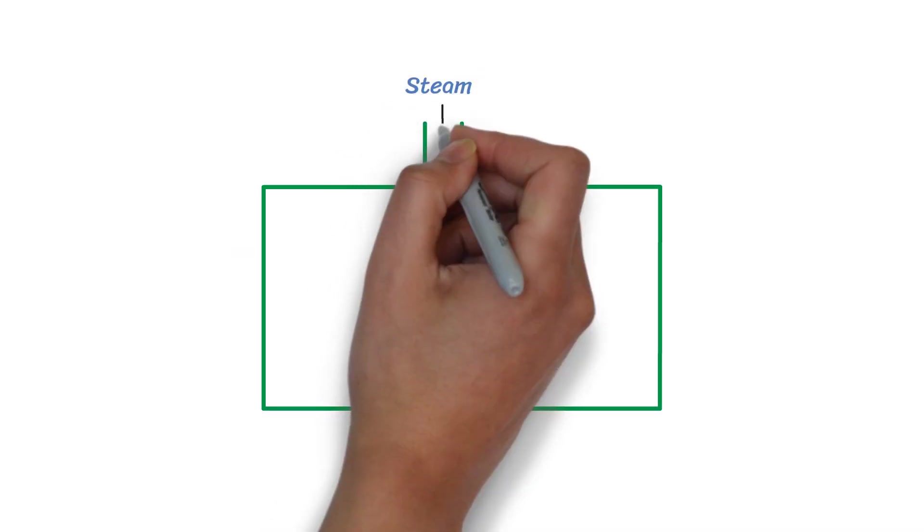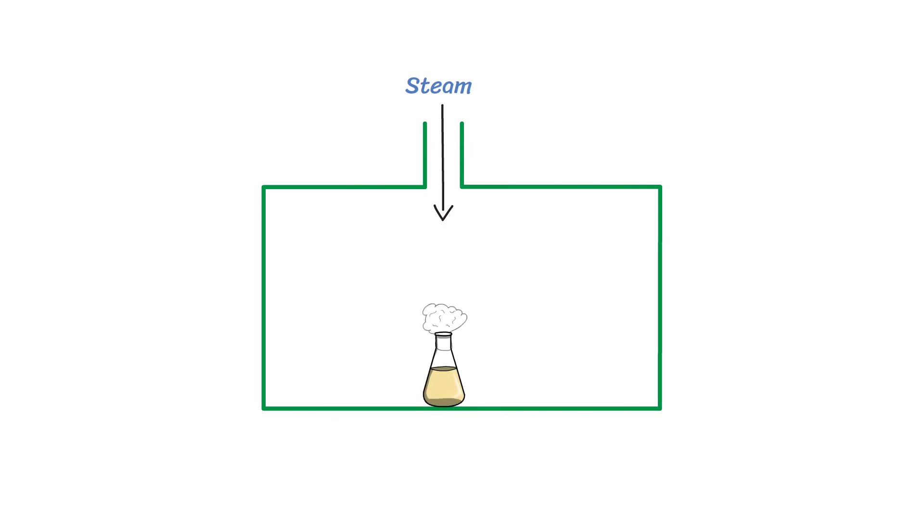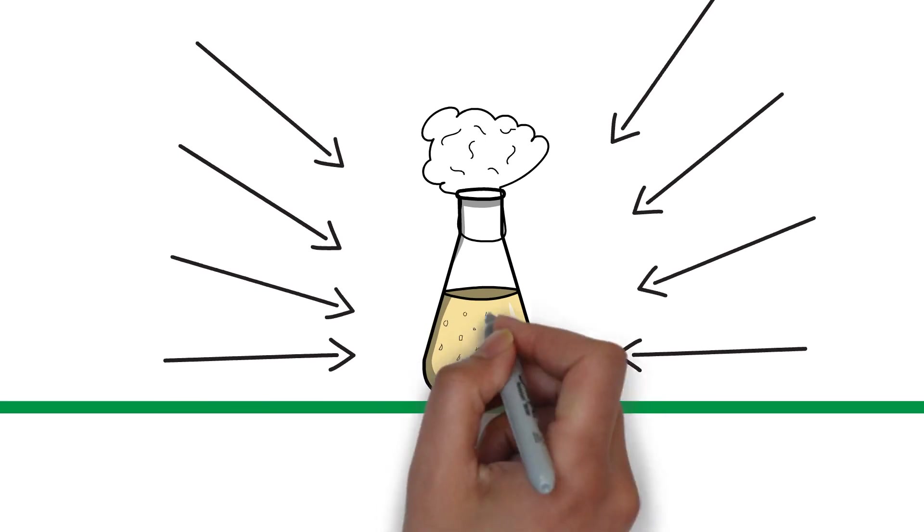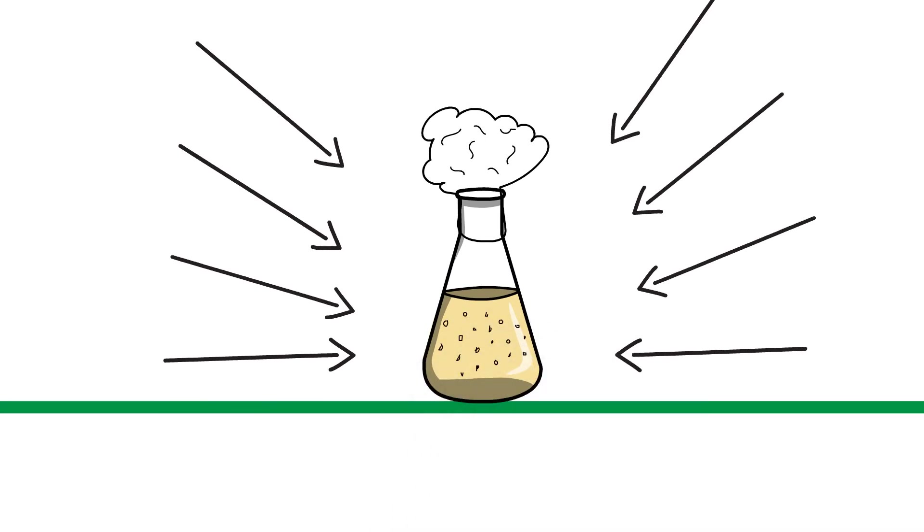When the steam is released into the autoclave, it condenses on the surface of the materials being sterilized and transfers the latent heat to the objects. The heat penetrates deep into the items, raising the temperature to the sterilization point.